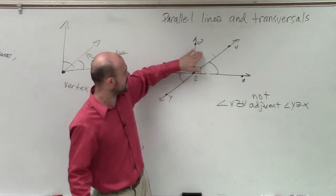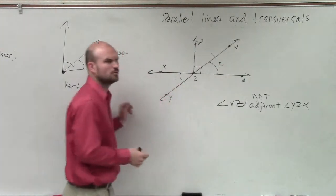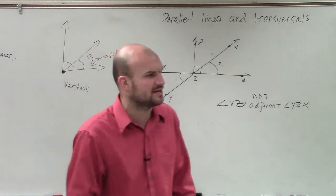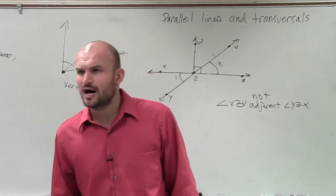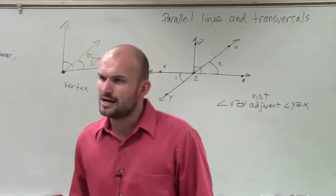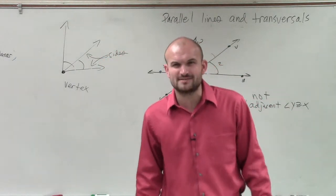But does anybody know what these two angles are, though? What are these? What is angle, I'll just call them angle one and angle two. What are they? They're not adjacent, but they're something else. Vertical. Vertical. And why are they vertical? Do you remember what? How do we get vertical angles? What creates vertical angles?